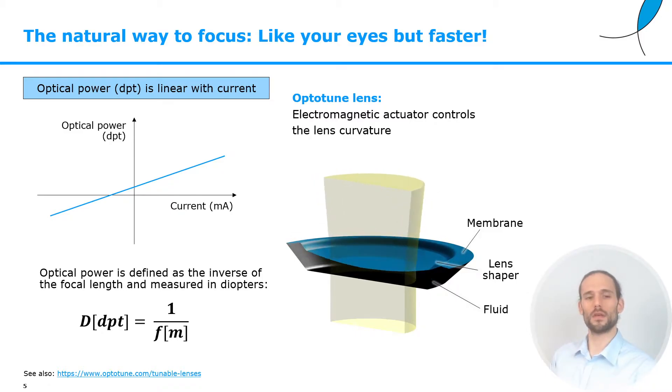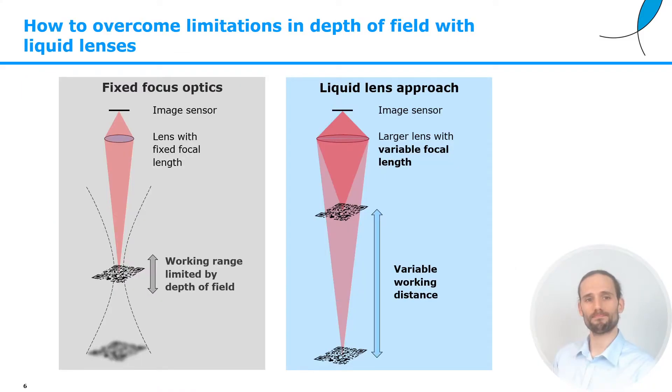As a reminder, the optical power in diopters is defined as the inverse of the focal length in meters. The liquid lens approach helps to overcome the intrinsic limitation of a fixed focus optics system where the working distance range is basically limited by the depth of field. With the liquid lens attached to our machine vision system, we can have a large variable working distance still with a very low F number.